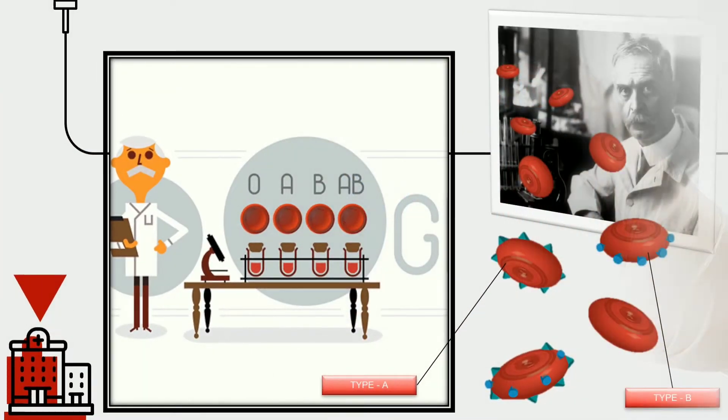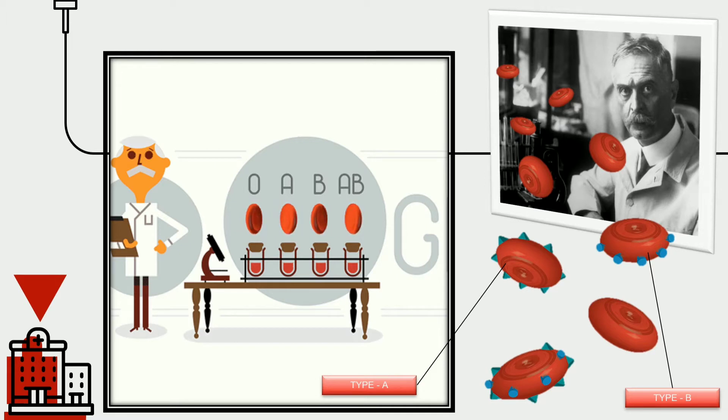In the year 1900, Dr. Karl Landsteiner discovered two kinds of antigen, type A and type B. He was awarded the Nobel Prize for medicine in 1930 for this discovery.